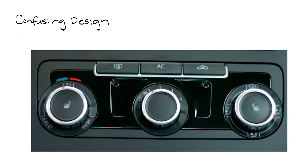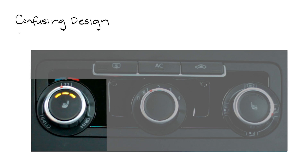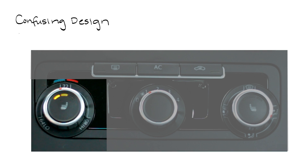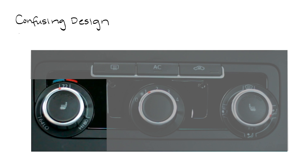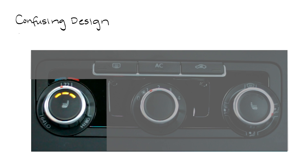Here's a picture of the seat heater control in my car. When I push the control, it prompts the highest temperature, and then I can push again to lower the temperature. This design is confusing to me because it's not in alignment with my conceptual model of how temperature controls should work. Most temperature controls I've encountered start with the lowest temperature and then move to the highest temperature. I wonder why the designer designed it this way — what would your guess be?